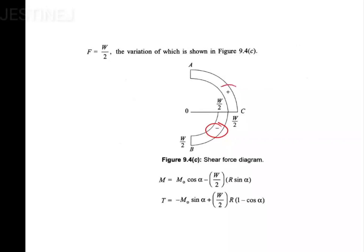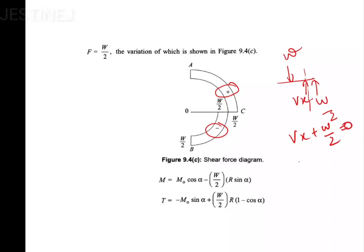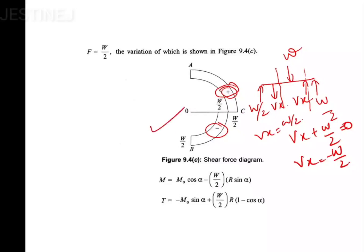Taking a section with W/2 acting and W applied at center: if Vx is assumed acting in one direction, then Vx + W/2 = 0, so Vx = −W/2. Using any rules you've studied, you will get W/2 on one side and a positive value on the other side. Taking a section from the other side, Vx = +W/2. You can easily draw this shear force diagram.